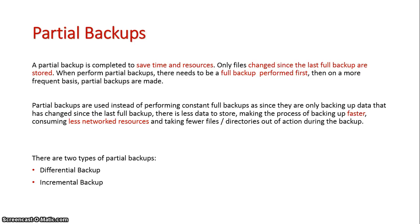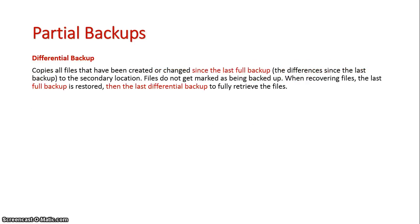There are essentially two types of partial backups: differential and incremental. Firstly, a differential backup basically backs up everything since the last full backup to a secondary location.